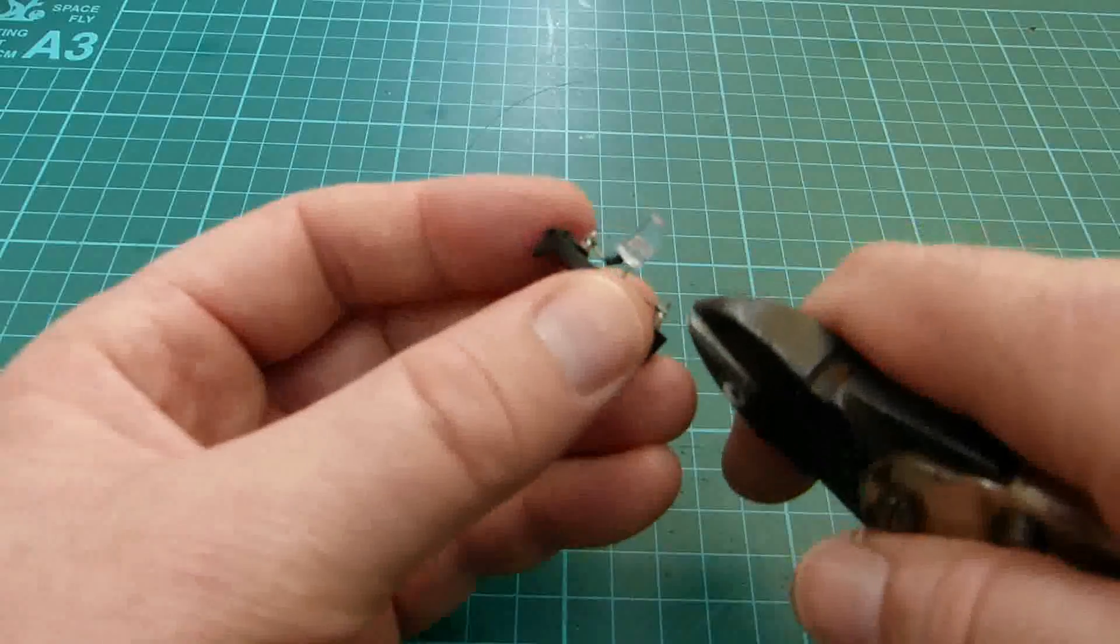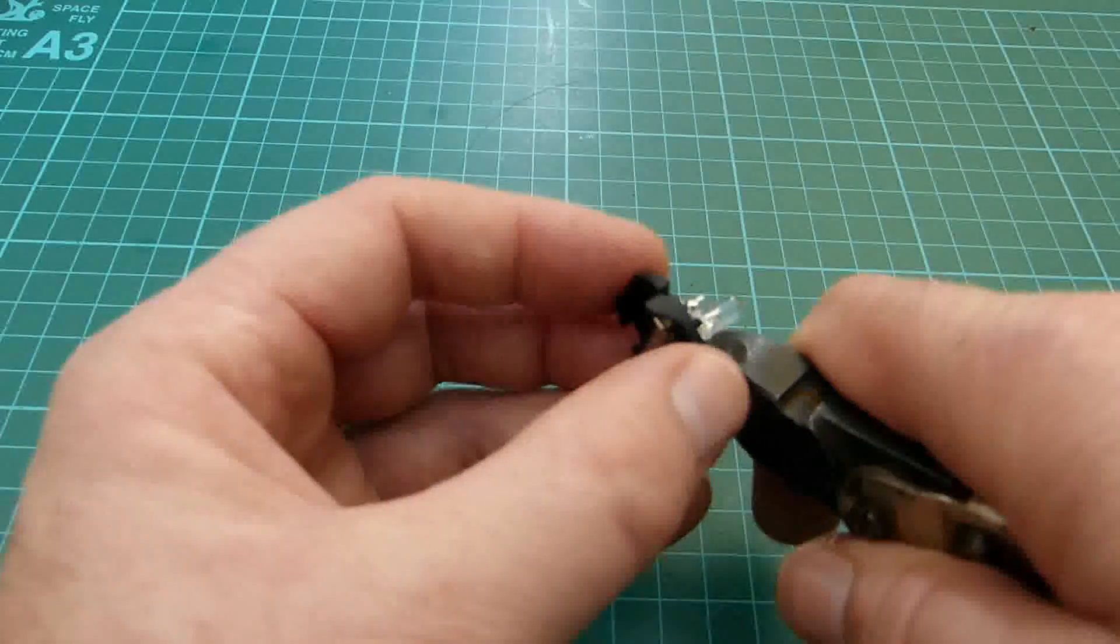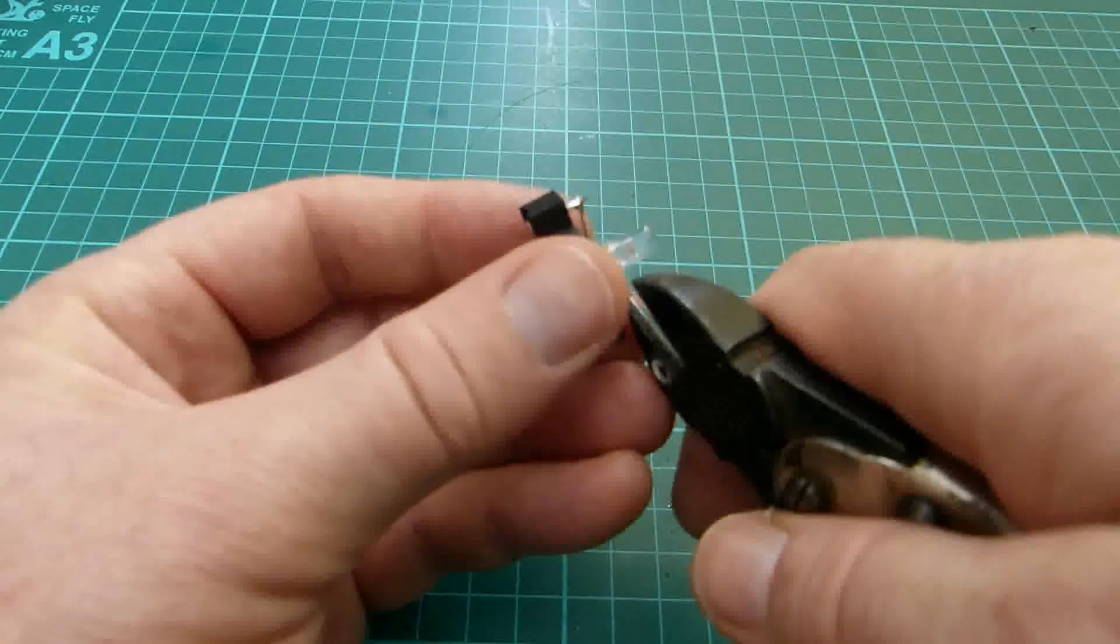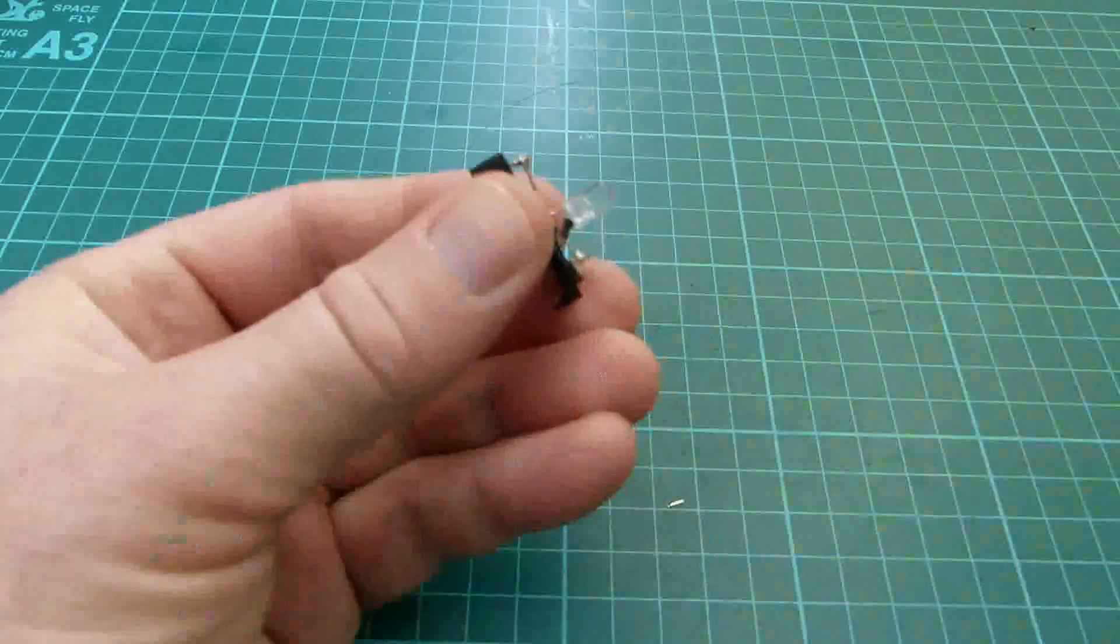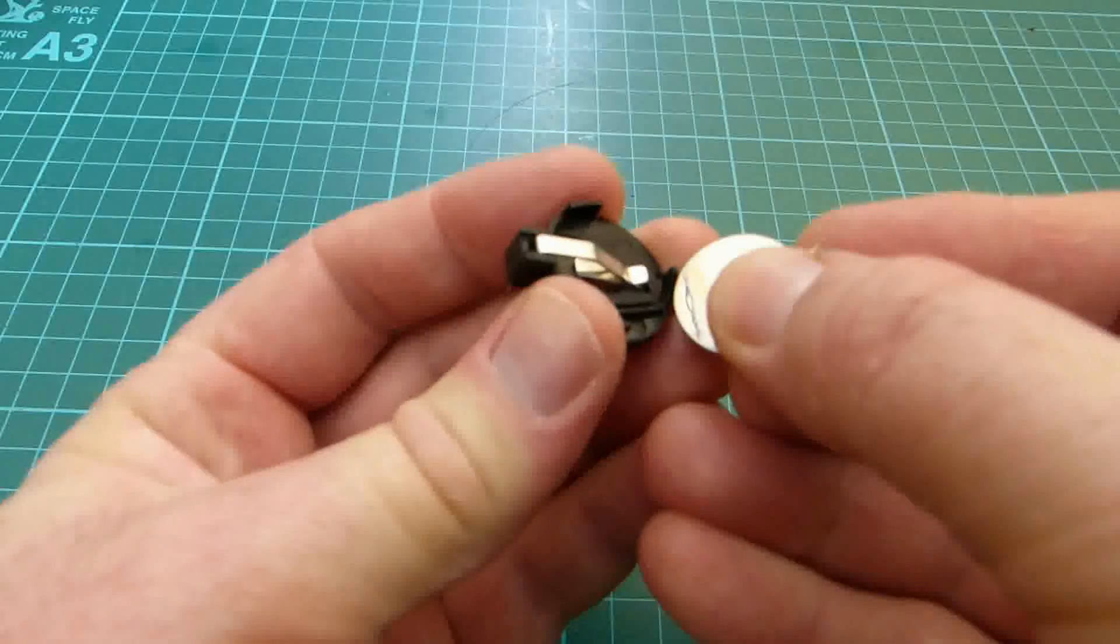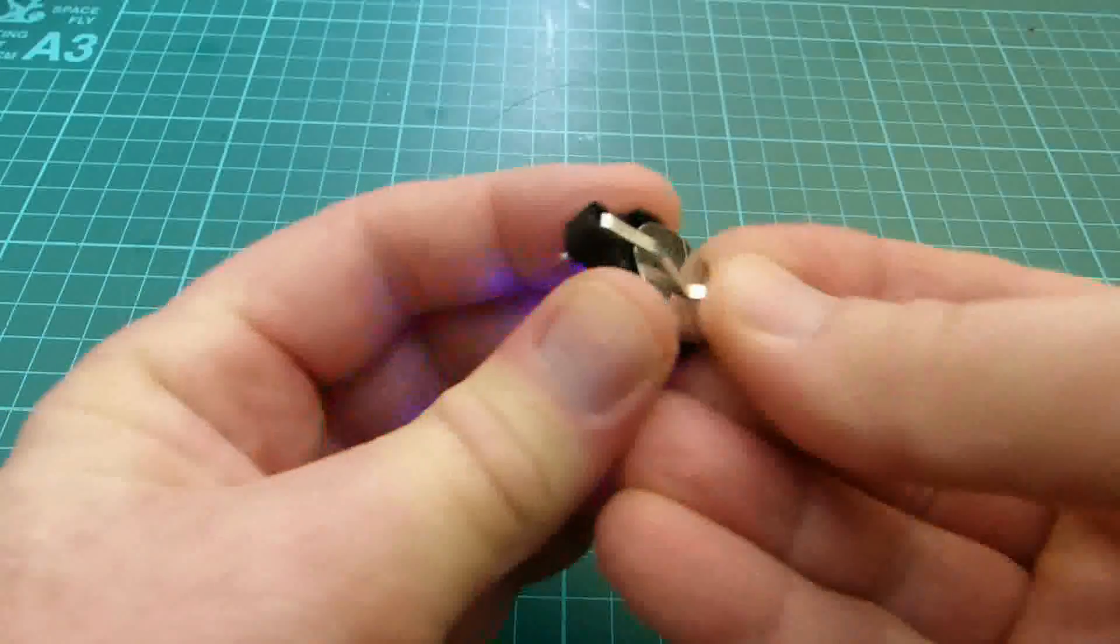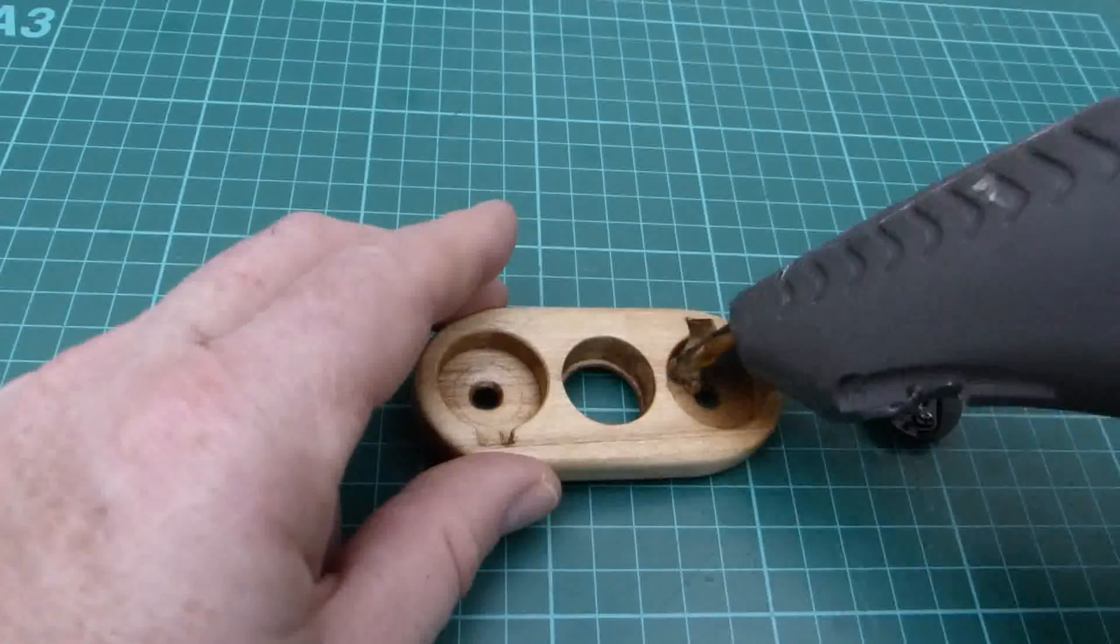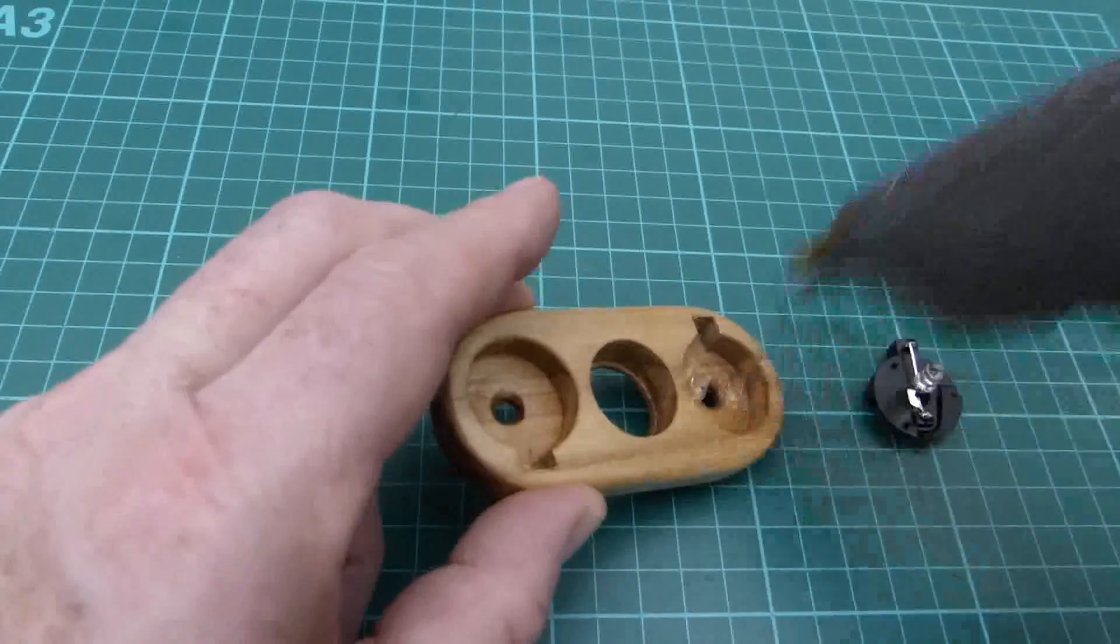The tops of the terminals were removed with cutters. And before final assembly I tested the LEDs were working. Once both LEDs were soldered I hot glued them into the wooden holder.